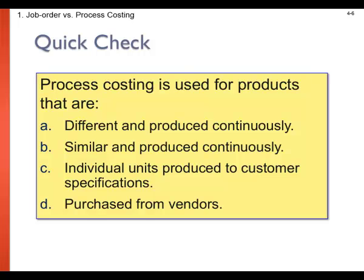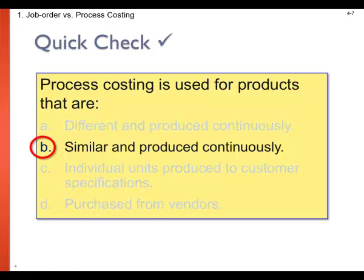Quick check: process costing is used for products that are A) different and produced continuously, B) similar and produced continuously, C) individual units produced to customer specifications, or D) purchased from vendors. The answer is B — similar and produced continuously. Think about Coca-Cola: every single bottle of Coke is exactly the same and is produced continuously.